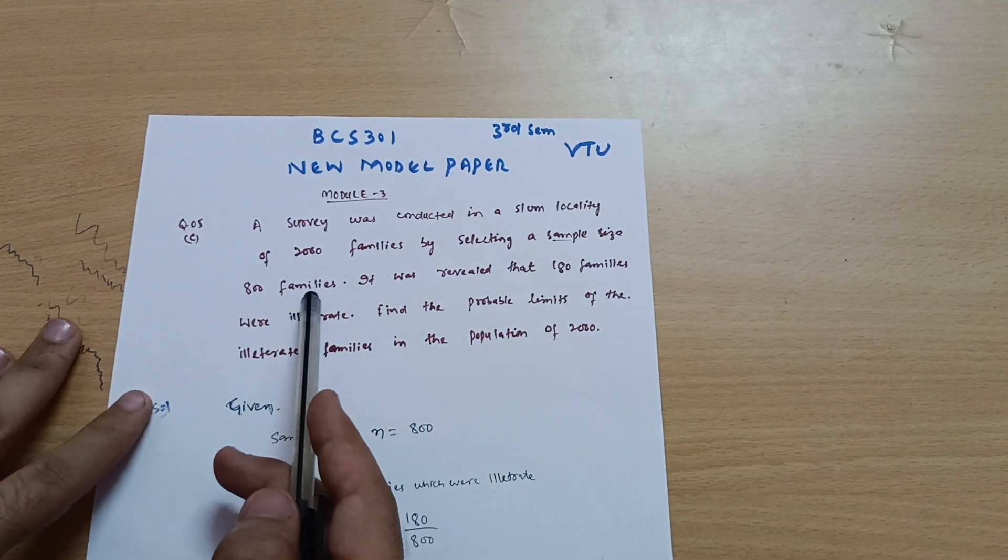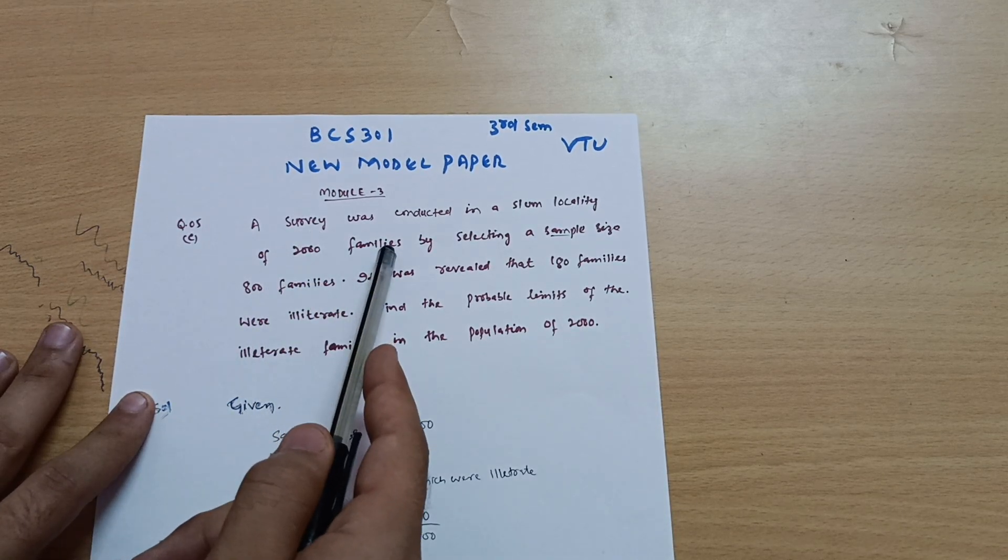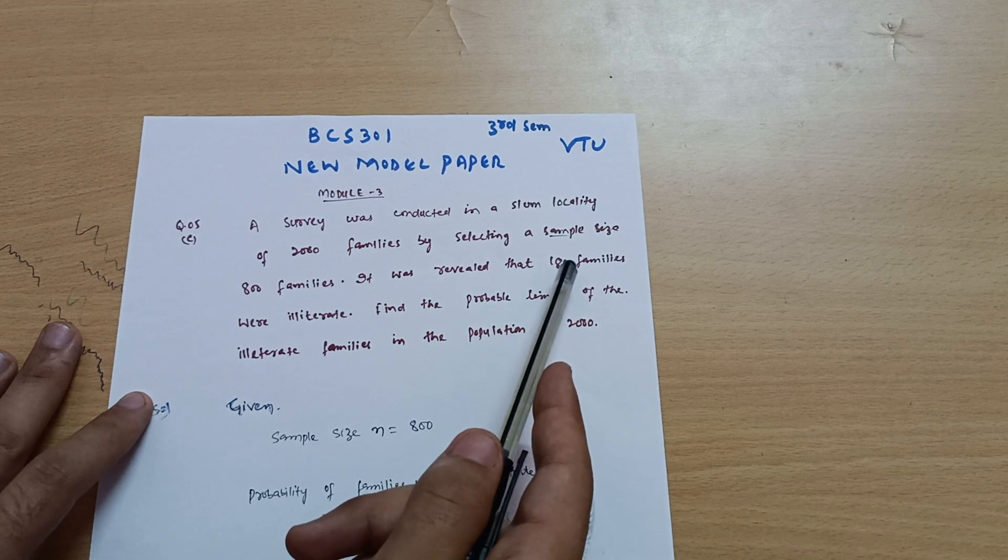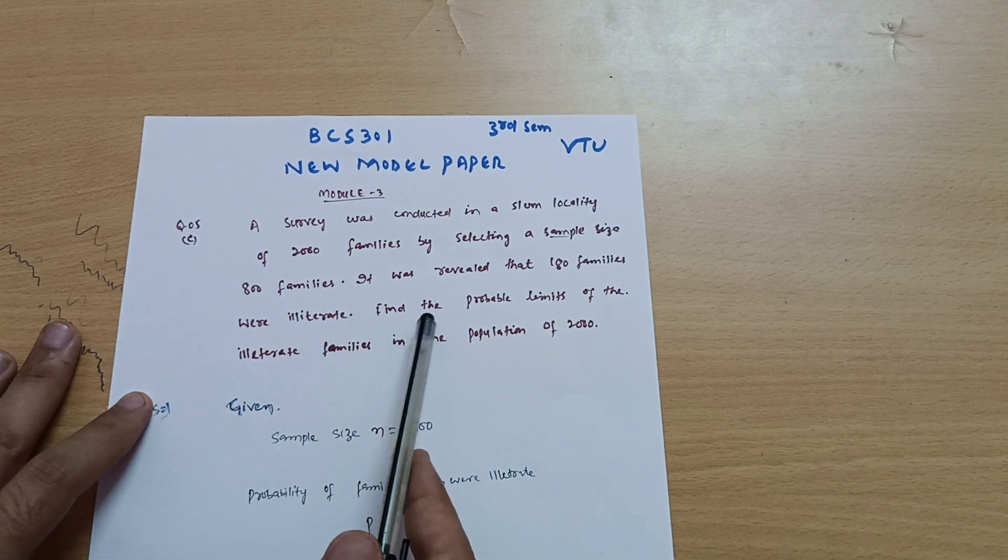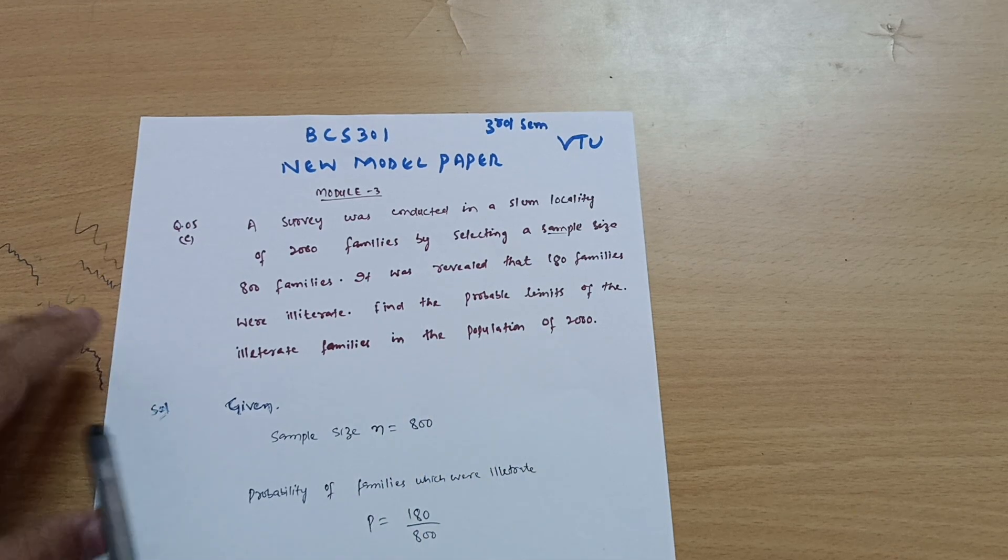So 800 families are chosen from 2000 families. It was revealed that 180 families were illiterate. Find the probable limits of the illiterate families in the population of 2000.